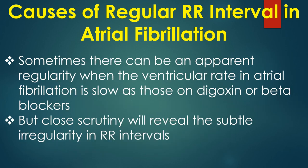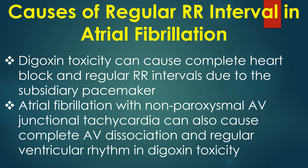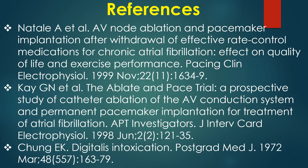Sometimes there can be apparent regularity when the ventricular rate in atrial fibrillation is low, as in those on digoxin or beta blockers, but close scrutiny will reveal subtle irregularity in RR intervals. Digoxin toxicity can cause complete heart block and regular RR intervals due to a subsidiary pacemaker in atrial fibrillation. Atrial fibrillation with paroxysmal AV junctional tachycardia can also cause complete AV dissociation and regular ventricular rhythm in digoxin toxicity.